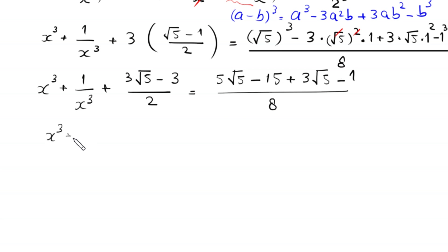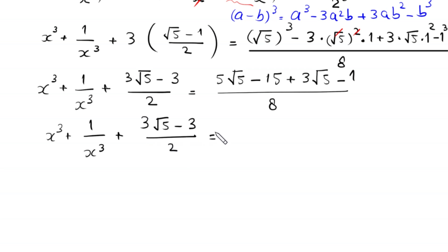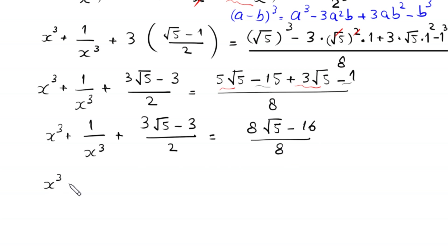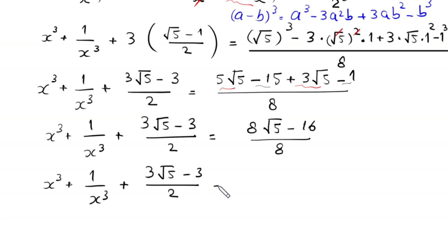So x cubed plus 1 over x cubed plus 3(√5 minus 1)/2 divided by 2 is equal to (5√5 plus 3√5) plus (negative 15 minus 1) over 8, which gives 8√5 minus 16 over 8. Factoring out 8 from the numerator gives 8(√5 minus 2) over 8.